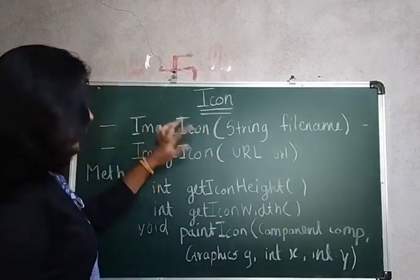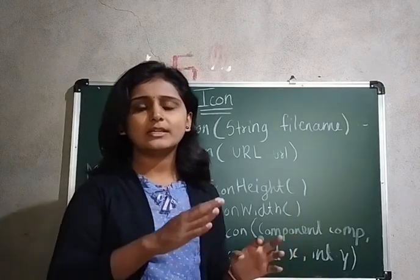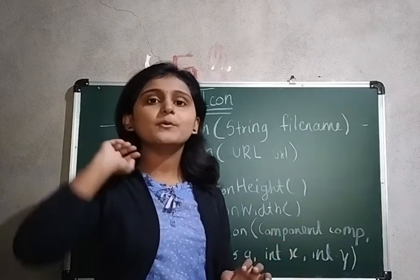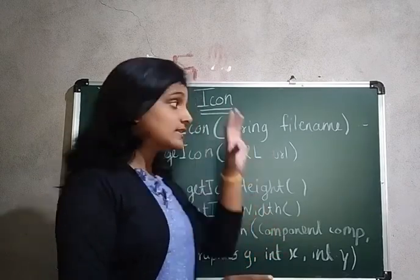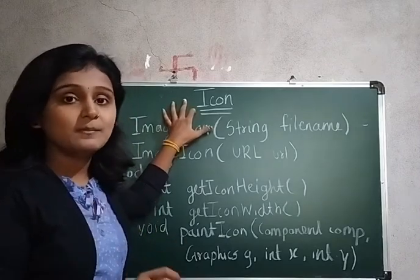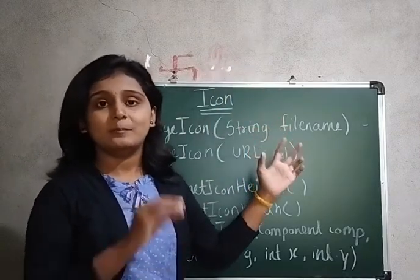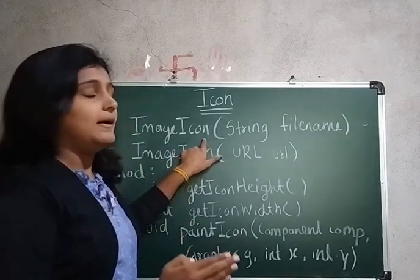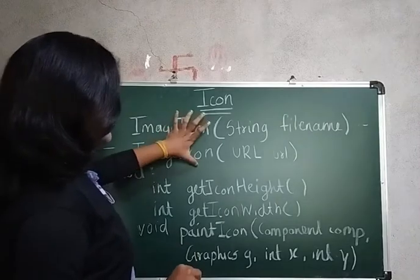The next component we will look at is Icon. As I mentioned, there are many differences between AWT and Swing, as Swing is the extended version. In Swing, we can have additional images and colors. For that purpose we use Icon. Just remember: Icon is not a class, it is an interface, and it is encapsulated by the ImageIcon class — that means ImageIcon implements the Icon interface.